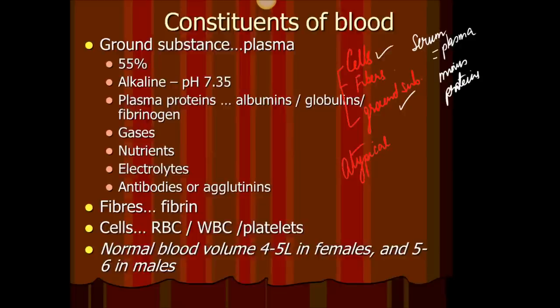In blood, we see cells and we see ground substance. However, connective tissue also has fibers — like collagen or elastic fibers. In blood, you do not see the fibers normally; you only see the fibers when blood clots, and those fibers are known as fibrin. Since fibers are not seen at all times, that's why we call blood an atypical type of connective tissue.